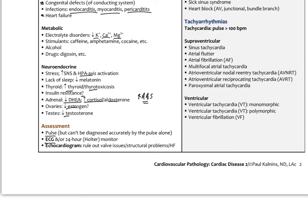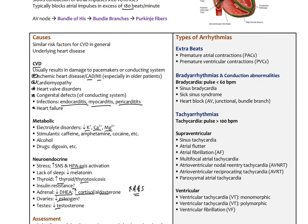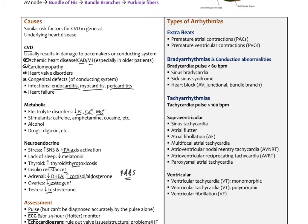An echocardiogram could also be helpful if we suspect a valve problem or heart failure. The types of arrhythmias include extra beats — called premature atrial contractions or premature ventricular contractions — which are benign, where people feel an extra beat or a skipped beat.